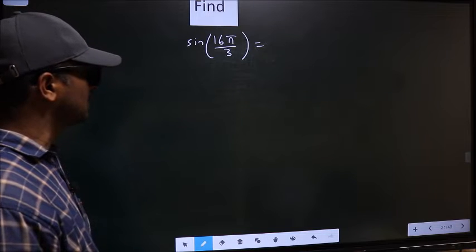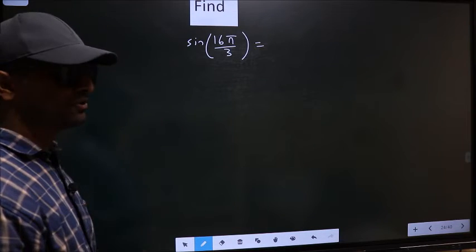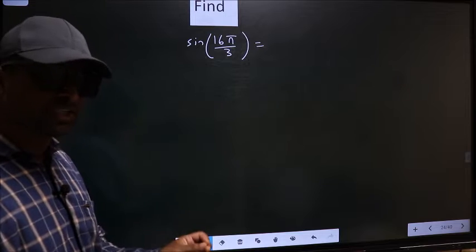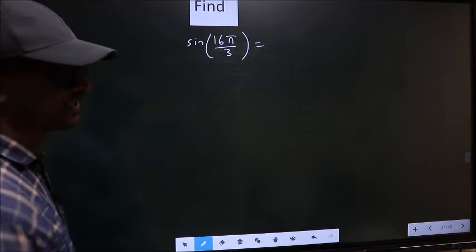Find sin 16π by 3. To find this, we should follow this method C.